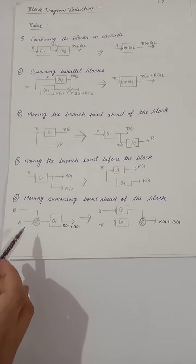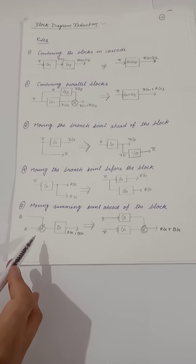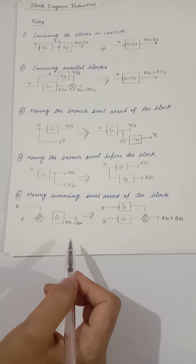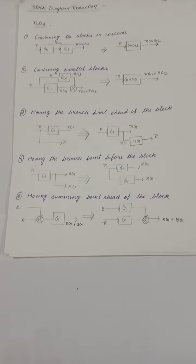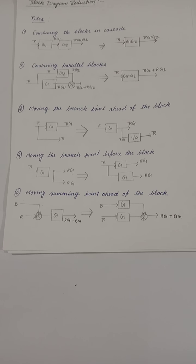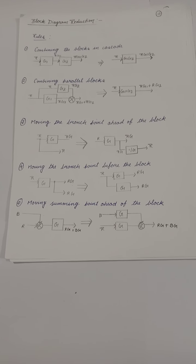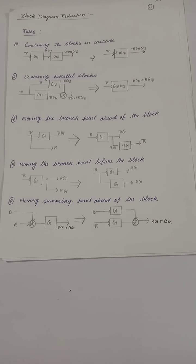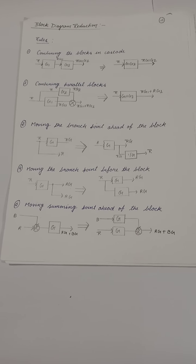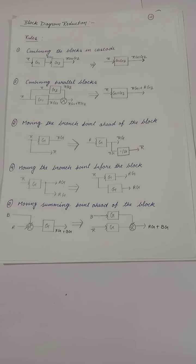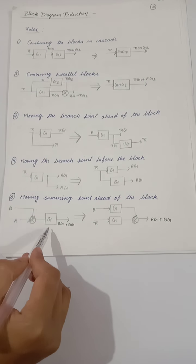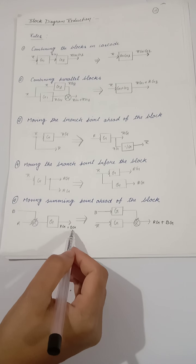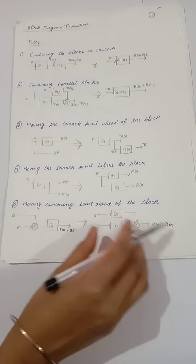For the fifth rule, moving the summing point ahead of the block — the same rule applies: when moving any summing point ahead of a block, you need to add an extra block in the moving path. This can be modified so that the output is RG plus BG.